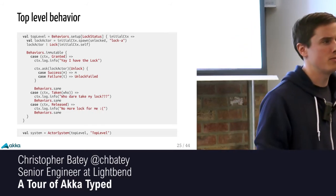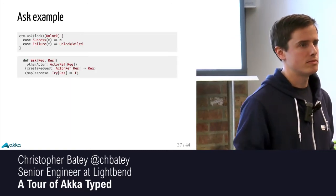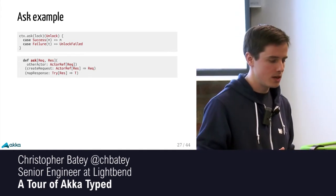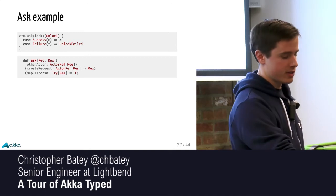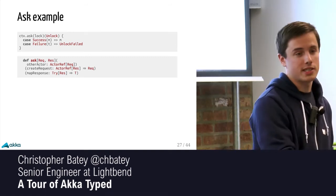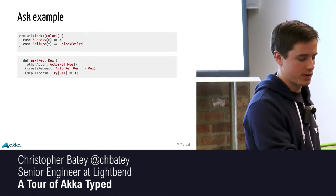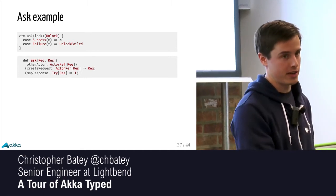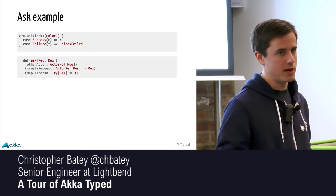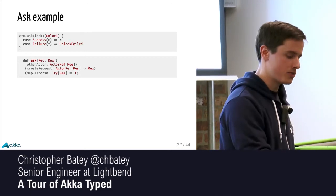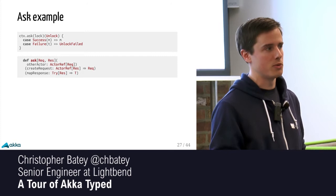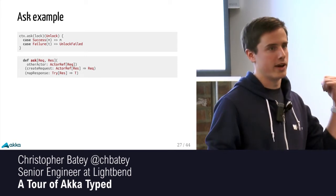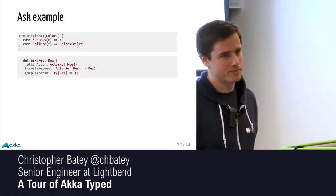Question: what if someone sends an unlock message to the unlocked state? Good question. This example will give a compiler warning because it's meant to be a total function. There's a receivePartial if you still want that. But what you should really do is explicitly handle all the cases, get rid of your compiler warnings, and do whatever is right — like log an error or send a rejection.